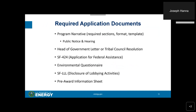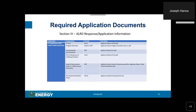There are several documents required with your application under this ALRD. I am going to go through each one in the upcoming slides. They are the program narrative, the head of government letter or tribal council resolution, the SF-424, the environmental questionnaire, the disclosure of lobbying activities, and the pre-award information sheet. ALRD Section 4, Response Application Information, contains a table providing all required documents, with an explanation and specific instructions for each.